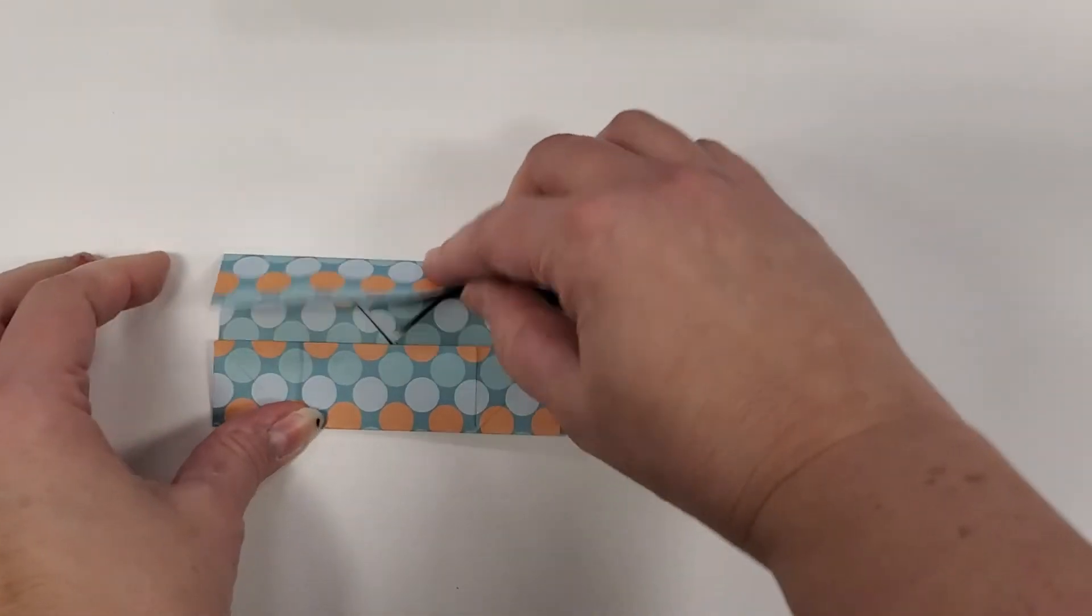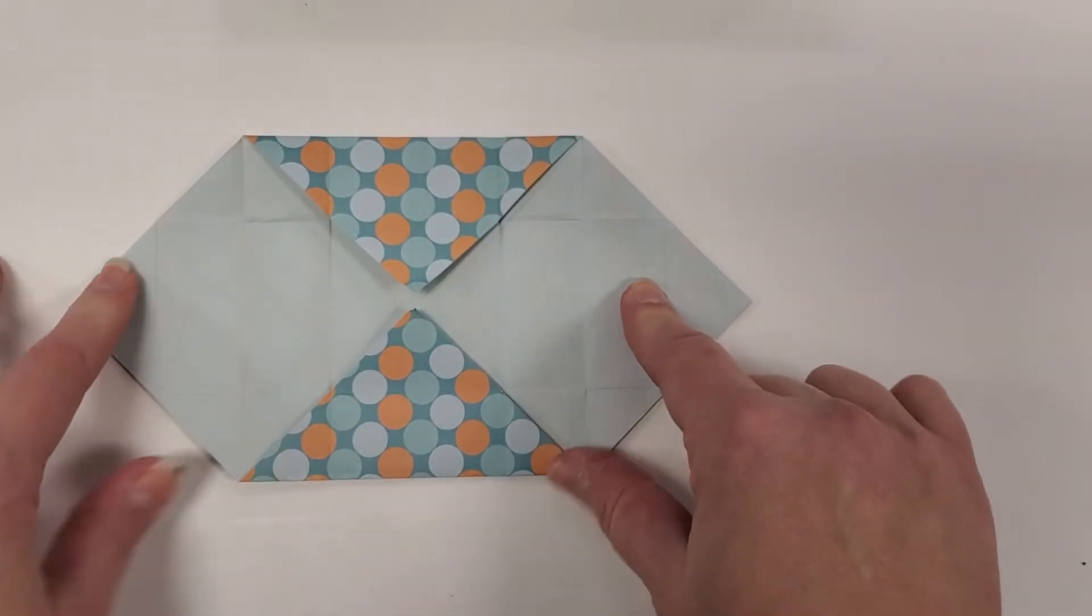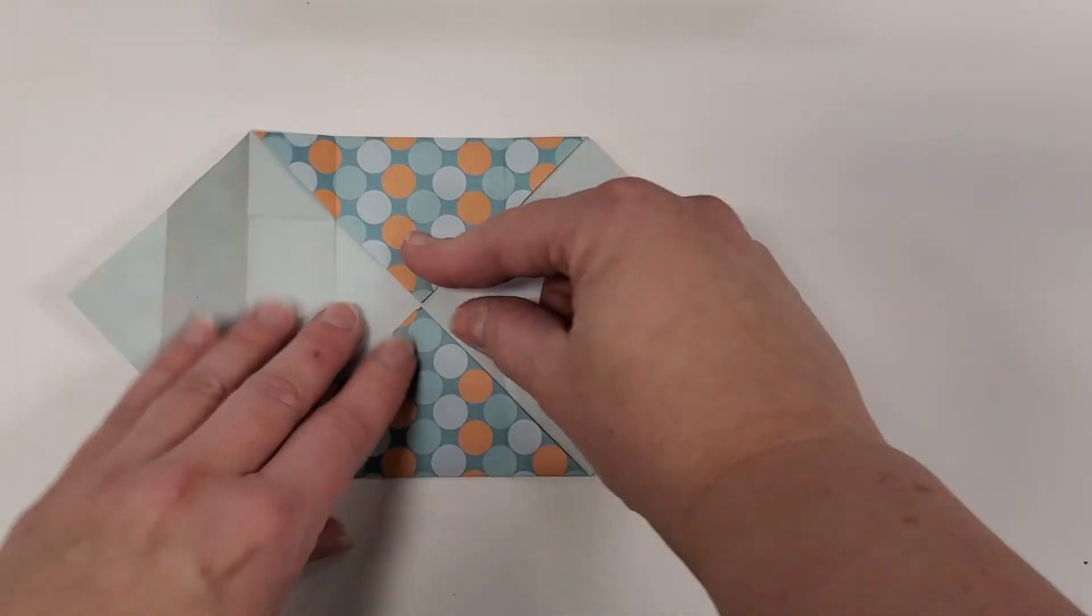And these are lots of pre-creases which means we're going to use them in just a second. So now I'm going to unfold it all the way back to this shape. So two of our corners are still folded in.